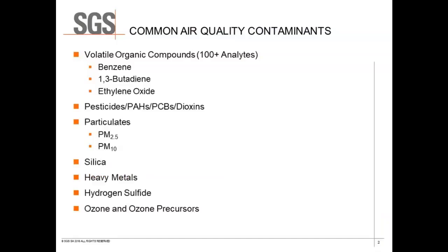First, you want to determine what constituents you're looking for. The common air quality contaminants — number one — are volatiles. There are well over 100 different analytes that are routinely monitored. Some of the big ones right now are benzene, 1,3-butadiene, and ethylene oxide. These are always subject to change with regulations, but these are some common HAPs — hazardous air pollutants — that people are looking for.